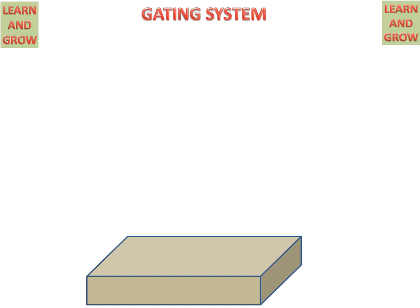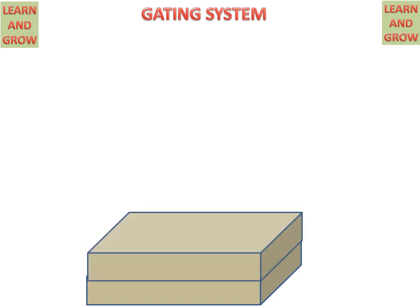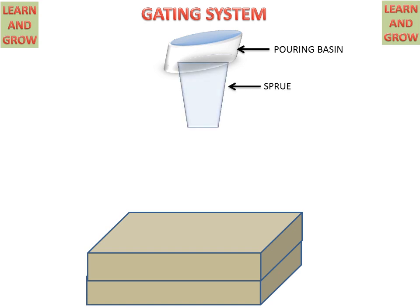We have a lower box named drag and an upper box named cope, in which the mold cavity will be created. There is a pouring basin for pouring the molten metal, a sprue for continuous flow of molten metal, and a sprue base well for distributing the molten metal to the runners.